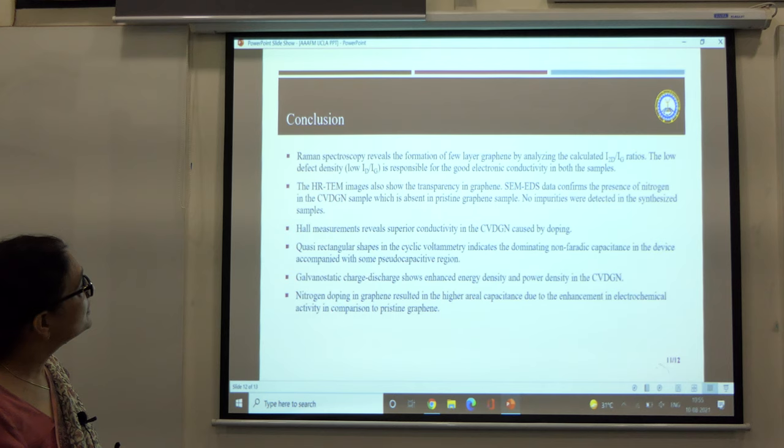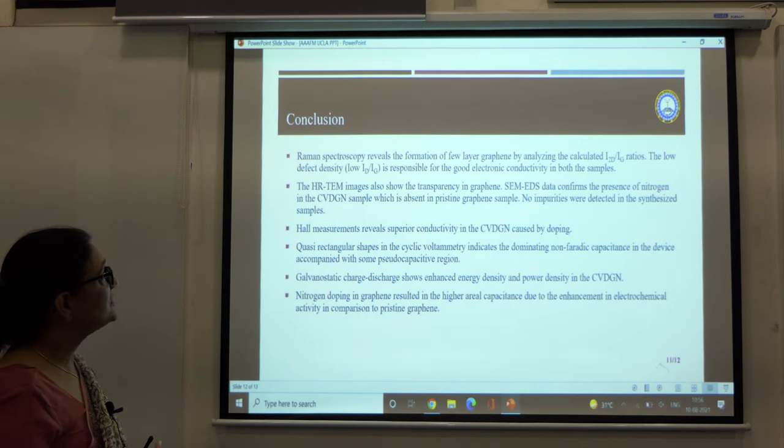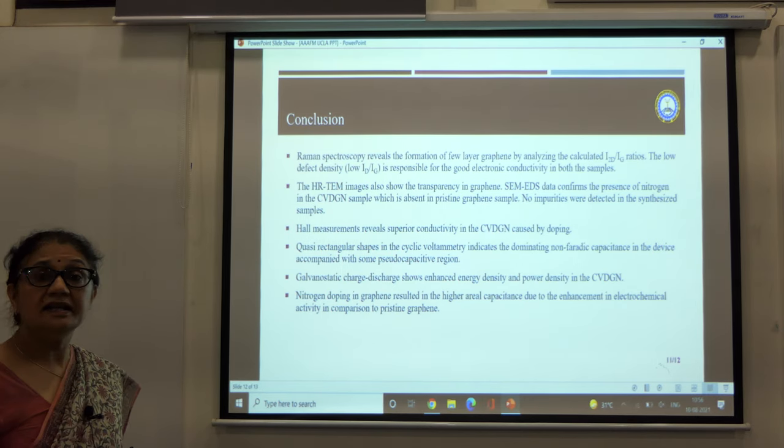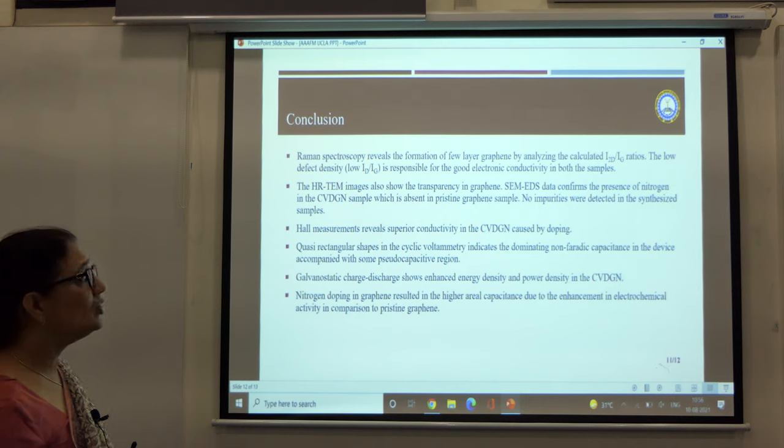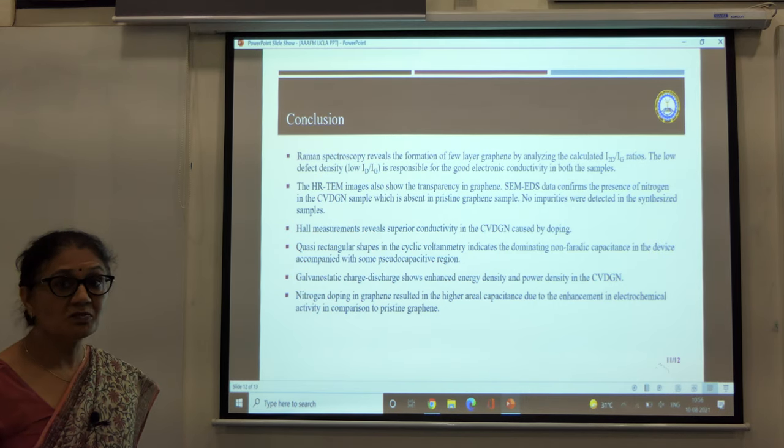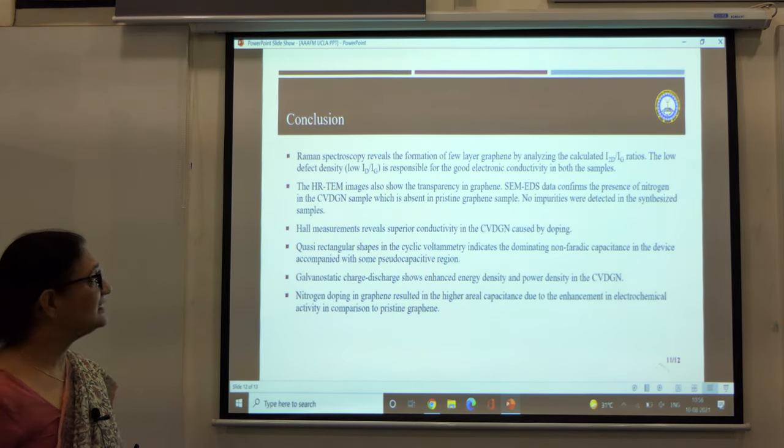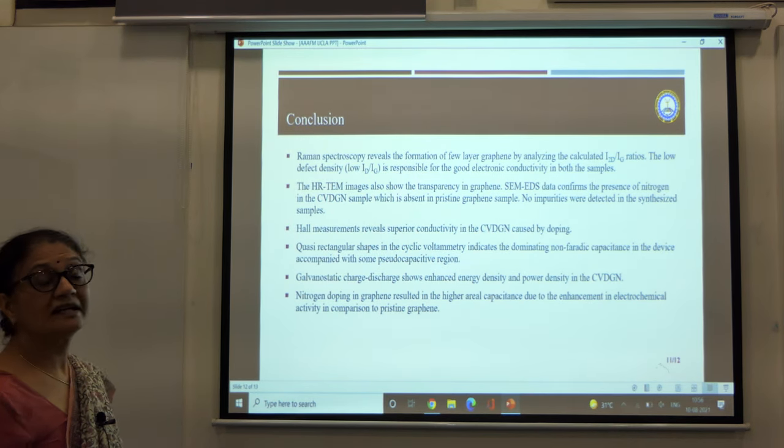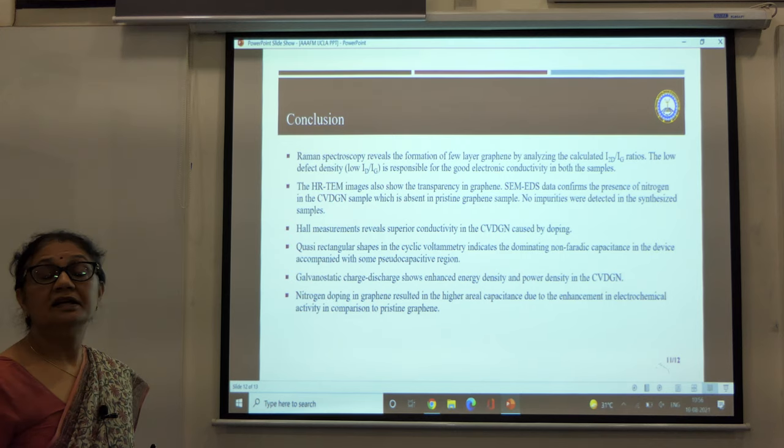We can conclude that the number of layers we got from Raman spectroscopy shows it's a few layer graphene sample. The high resolution TEM images show very good transparency in these samples. The EDS spectra confirms the nitrogen doping, although the amount is quite small. There were no impurities detected in the synthesized sample. The Hall measurements show superior conductivity caused by doping.